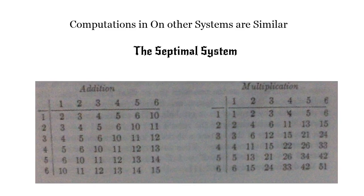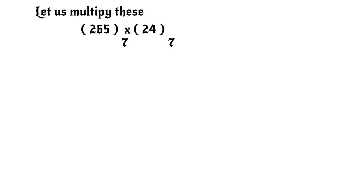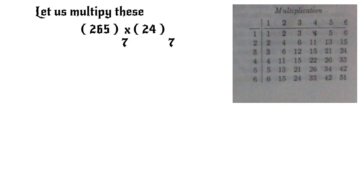Before proceeding with an example of multiplication in the septimal system, it is advisable to write down the tables we would have to use. Now we try to multiply 265 by 24 where these are written in the septimal system. The decimal equivalent would be 145 and 18.